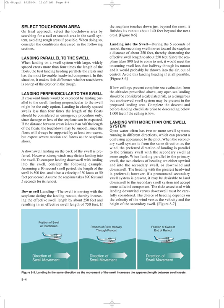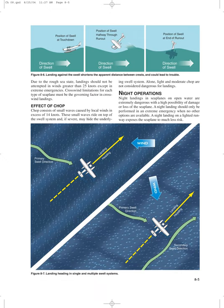The risks associated with landing downwind versus downswell must be carefully considered. The choice of heading depends on the velocity of the wind versus the velocity and height of the secondary swell. Due to the rough sea state, landings should not be attempted in winds greater than 25 knots except in extreme emergencies. Crosswind limitations for each type of seaplane must be the governing factor in crosswind landings. Chop consists of small waves caused by local winds in excess of 14 knots. These small waves ride on top of the swell system and, if severe, may hide the underlying swell system. Alone, light and moderate chop are not considered dangerous for landings.